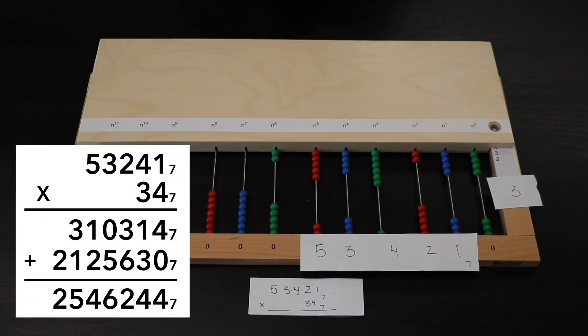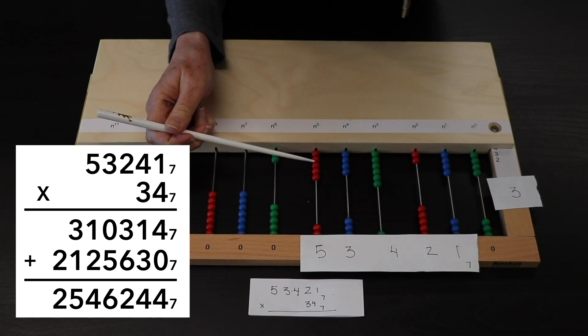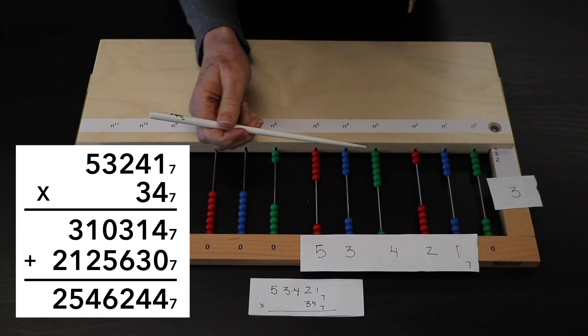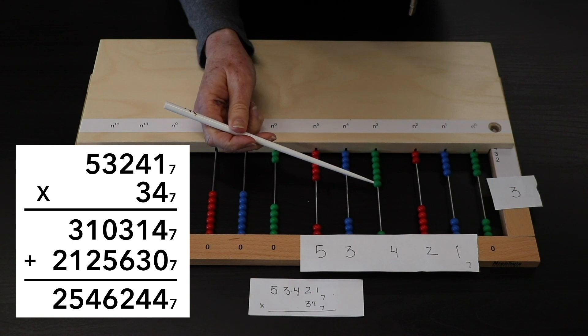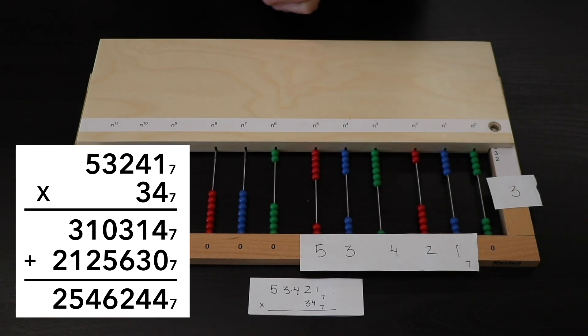So, my total product is 2, 5, 4, 6, 2, 4, 4 base 7.